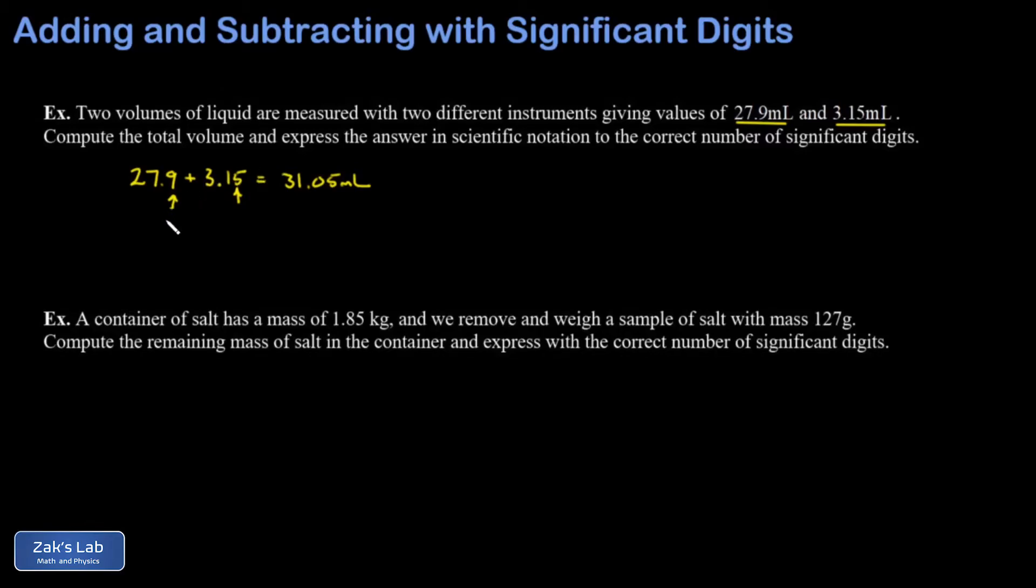So this tenths place is the crudest decimal point of the participants in the problem. And we should express our answer with uncertainty in the tenths place. In other words, rounding it off to the tenths place. We round up when we see a five, so 31.1.